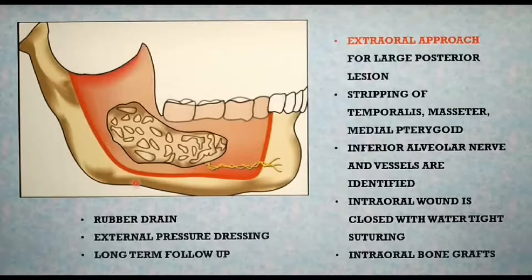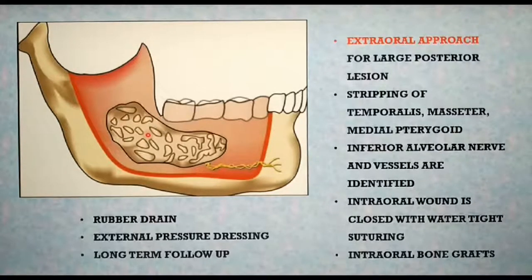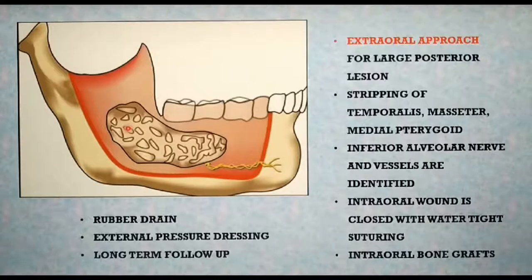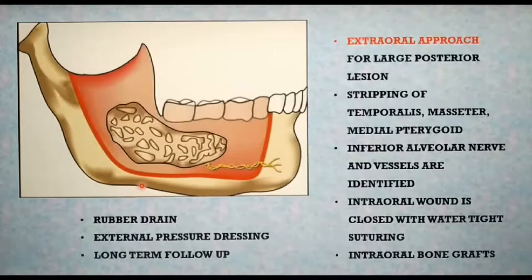A watertight suturing must be performed for the intraoral incision. Following this, an immediate bone graft is inserted through the extraoral wound and fixed with intraosseous wires or bone plates — reconstruction is an important aspect of marginal resection, especially in the posterior mandible. The wound is then closed in layers with a small rubber drain inserted to prevent hematoma formation. After wound closure, an external pressure bandage is applied and careful long-term follow-up is mandatory.